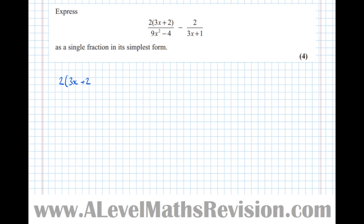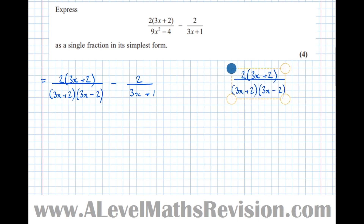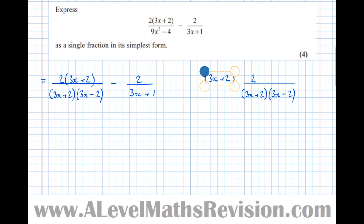So we have 2 over (3x plus 2) with the denominator 9x squared minus 4, which is the difference of two squares, factorising to (3x plus 2)(3x minus 2). If you need more practice with factorising quadratics, go back to my tutorial on that. Take away 2 over (3x plus 1). Now I want to reorder this so that a hidden factor of 1 becomes apparent. Bringing the (3x plus 2) to the front of both gives us (3x plus 2) over (3x plus 2) times 2 over (3x minus 2).